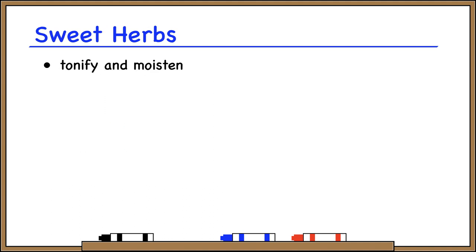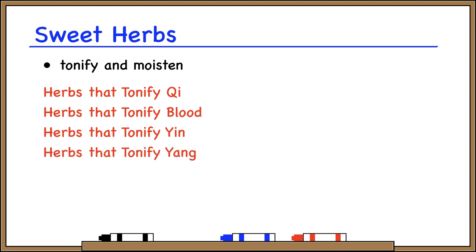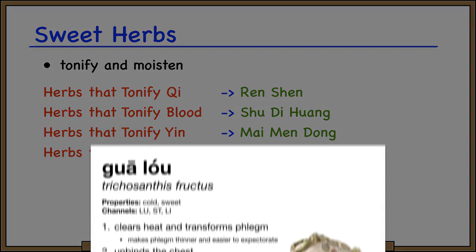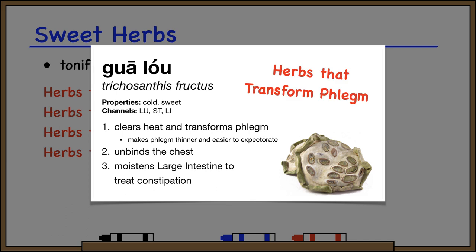Sweet herbs tonify and moisten. So any herb in the tonify category — whether it's tonify qi, tonify blood, tonify yin, or tonify yang — is going to be marked sweet in flavor. So Ren Shen, Shu Di Huang, Maimondong, and Lu Rong are all sweet in flavor because they tonify. Even herbs outside these categories can be marked sweet if they have some action of tonifying or moistening. For example, Gua Lou is in the category herbs that transform phlegm-heat, but its way of transforming phlegm is by moistening the lung and making phlegm thinner and easier to expectorate — so it's marked sweet. It also moistens the large intestine to relieve constipation. The sweet flavor corresponds to earth and the spleen channel.